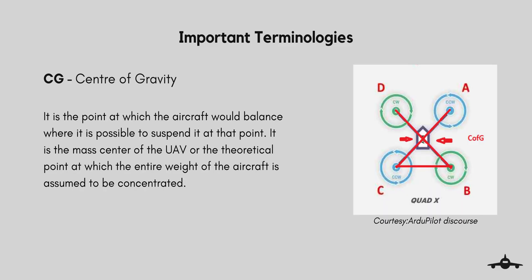Center of Gravity, also called CG, is the point at which the aircraft would balance if it were possible to suspend it at that point. It is the mass center of the UAV, or the theoretical point at which the entire weight of the aircraft is assumed to be concentrated. Altering the location of the CG also changes the center of mass, because the force of gravity acts roughly on the CM.